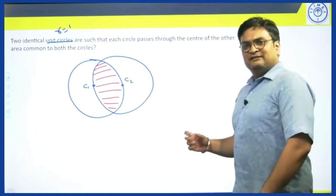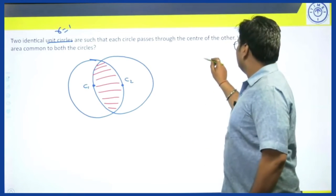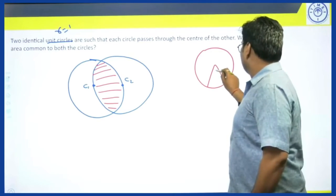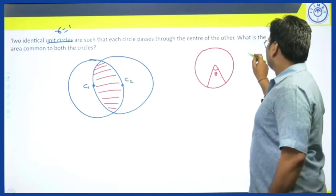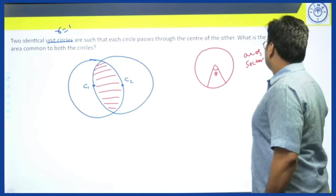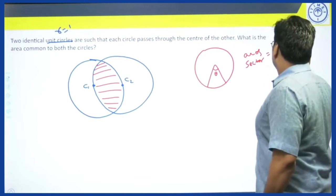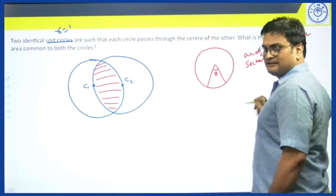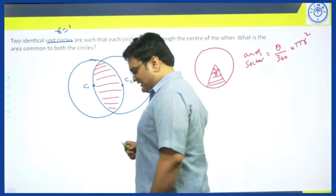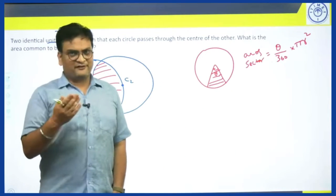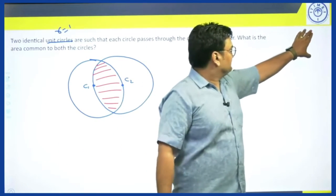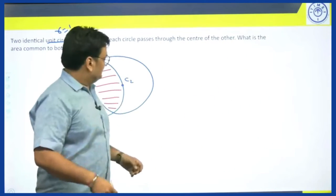For answering this, there are some basic details one must know. If you take a sector of a circle which makes an angle θ at the centre, the area of the sector is given as (θ/360) × πr². Here r is the radius and π is a constant. I am going to make use of this formula to solve the question.